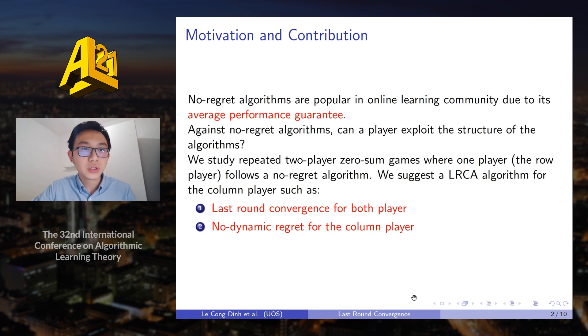In order to answer this question, we study repeatedly played zero-sum games where one player, the row player, follows a no regret algorithm. And we suggest a new algorithm for the column player such that it achieves last round convergence for both players and no dynamic regret for the column player.